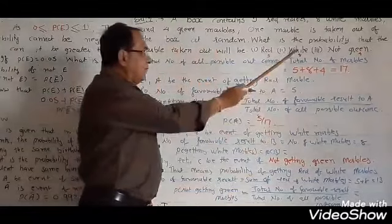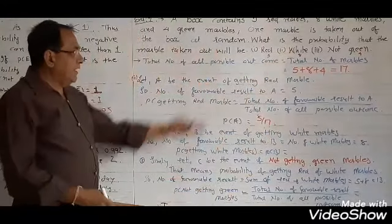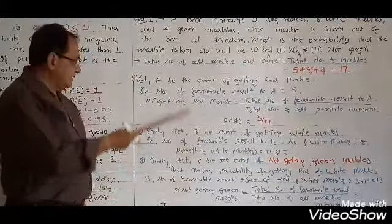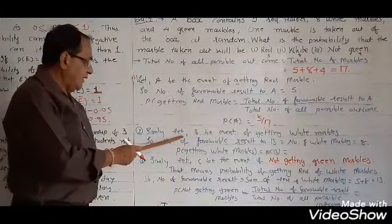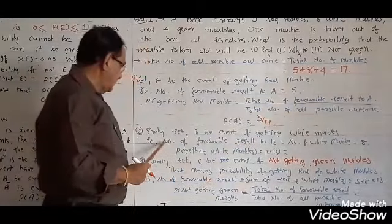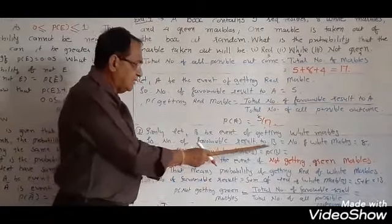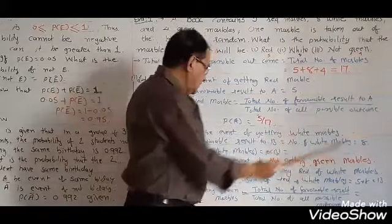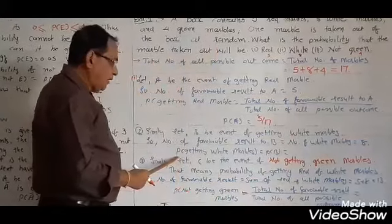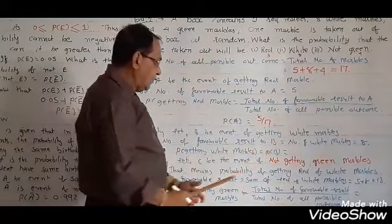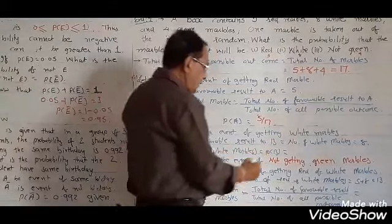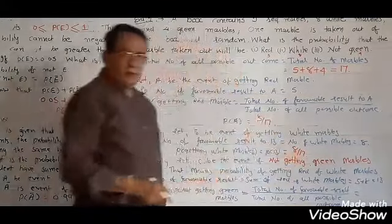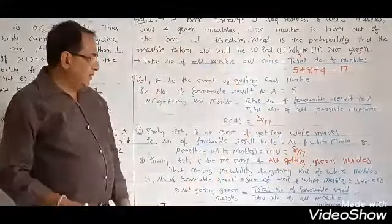Second, we talk about the white marble. Let B be the event of getting a white marble. Number of favorable results equals number of white marbles, which is 8. Probability of getting a white marble, P(B), equals 8 upon 17 — that is, favorable results upon all possible outcomes.